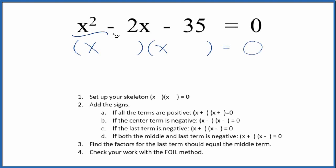Let's factor the equation x squared minus 2x minus 35. To do that, we'll use these guidelines here. The first thing we want to do is set up a skeleton equation like this here. This is our skeleton equation, and that's useful to help us get things in order.